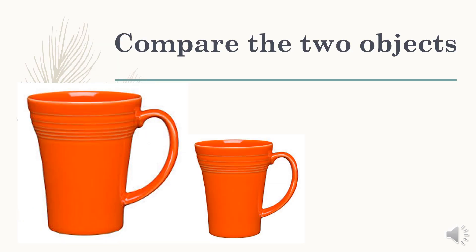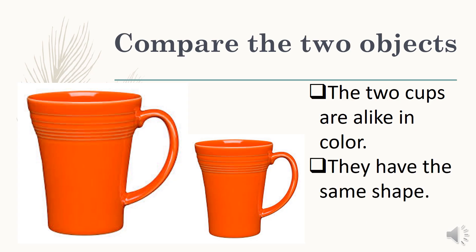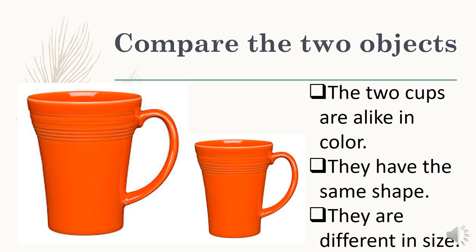Let's try to use the skill of comparing with these two objects. The two cups are alike in color — they are both orange. They have the same shape. They are different in size; the first cup is bigger than the other.